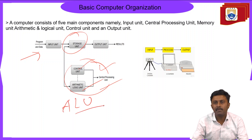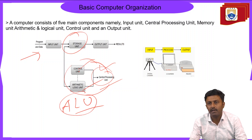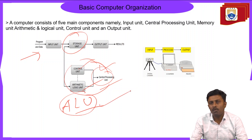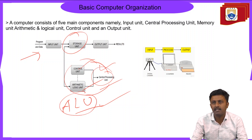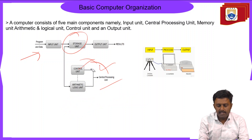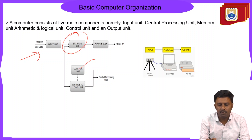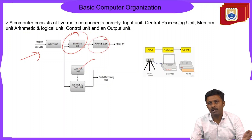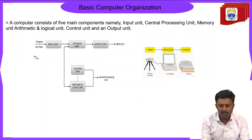The ALU is responsible for performing all arithmetic operations like addition, subtraction, multiplication, and division, and logical operations. The control unit is responsible for controlling the complete operation of the computer. The storage unit is the memory, and the output unit consists of output devices. These are the five components of a computer.